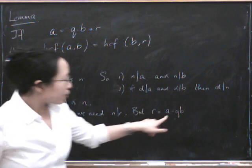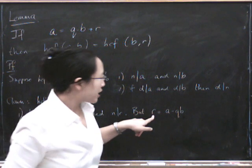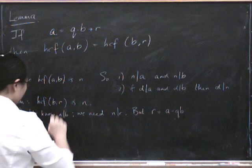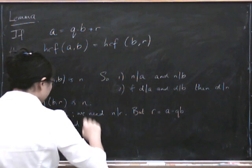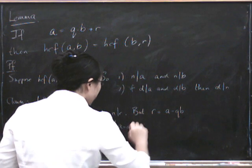And we know that N divides A and N divides B. So N has to divide R. And N divides A and N divides B. So N definitely divides A minus QB.